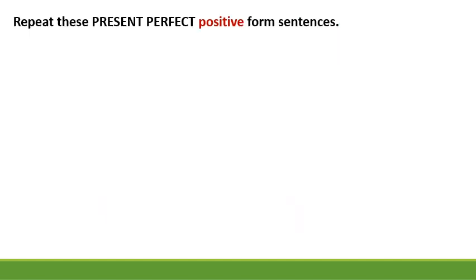Repeat these present perfect positive form sentences: 1. Dana has been the best student today. 2. Jason and Tim have been in the library since 2 p.m. 3. I have never been hardworking. 4. You have been enthusiastic today. 5. My father has usually been an inspiring person.